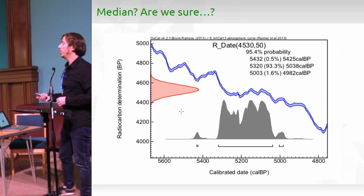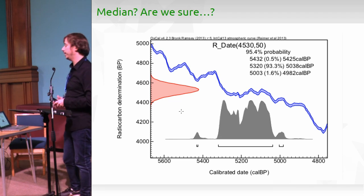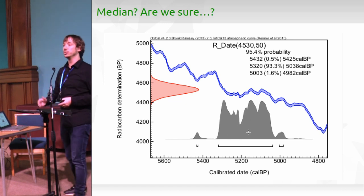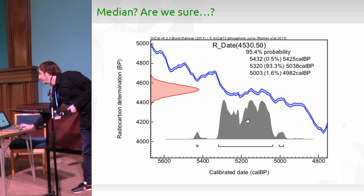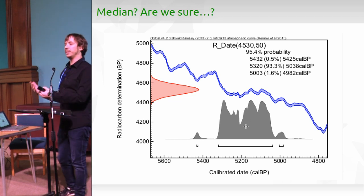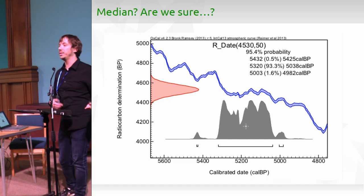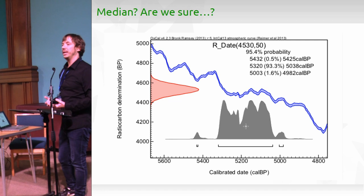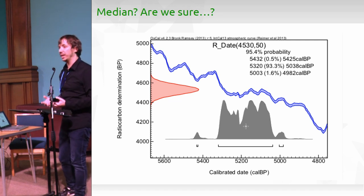Moreover, C14 dates are very complex probability distributions. Looking at the calibrated C14 curve, the median is one value, but the actual time of arrival based on the full probability distribution could be 200 years before or 100 years later with good probability. So in the end, using the median is an oversimplification of something that may not make sense.